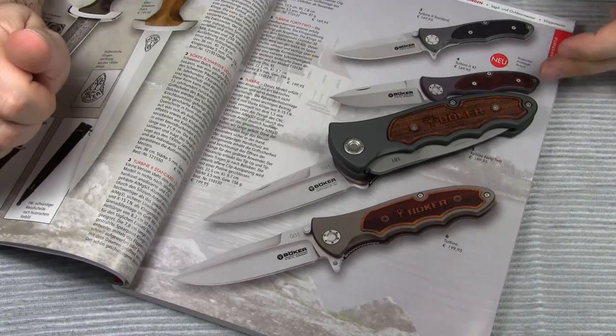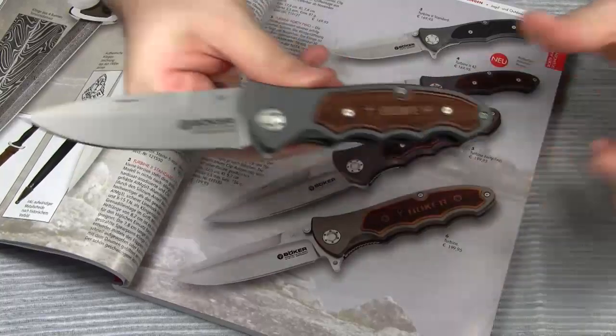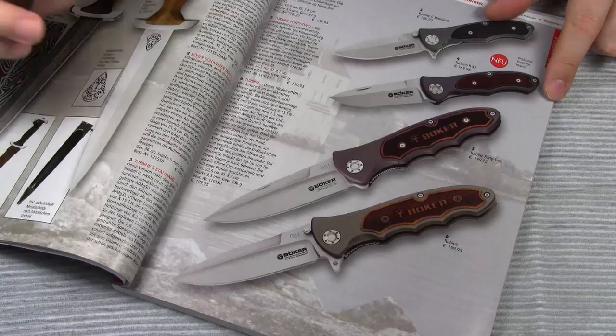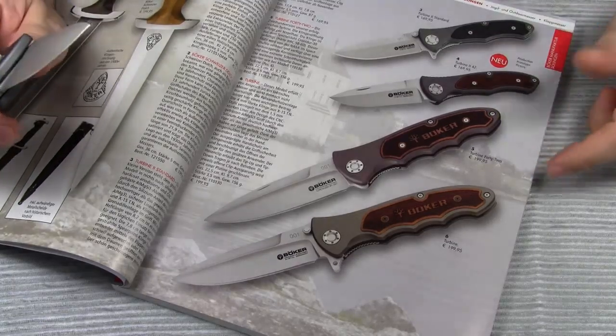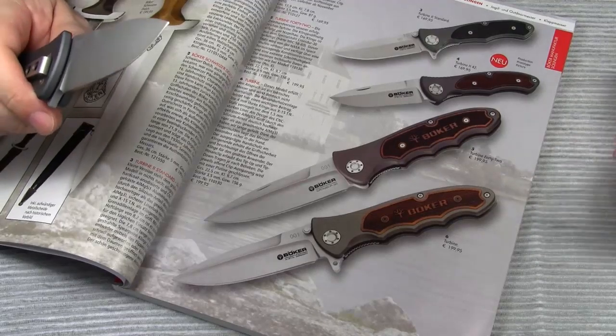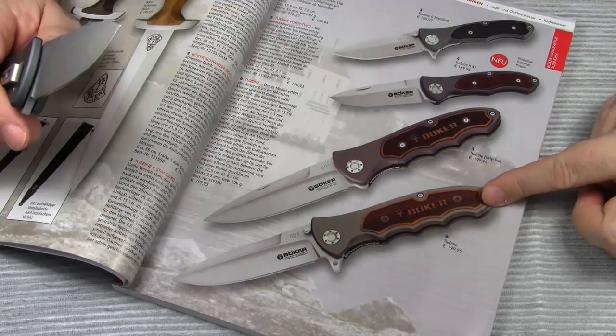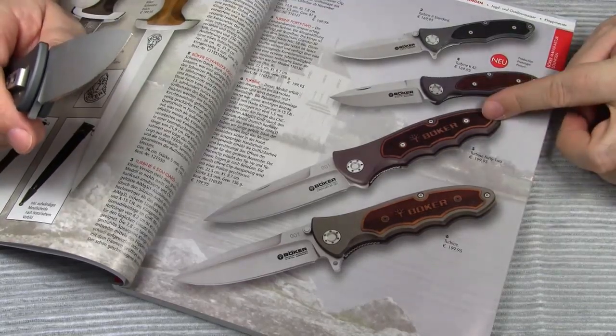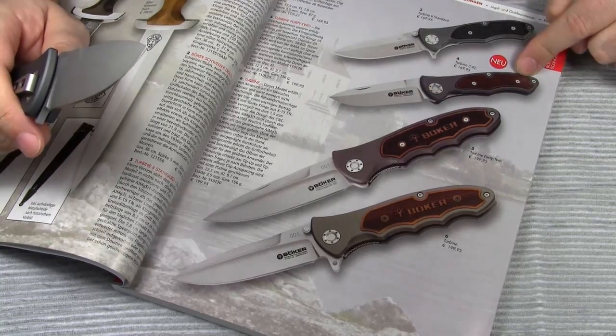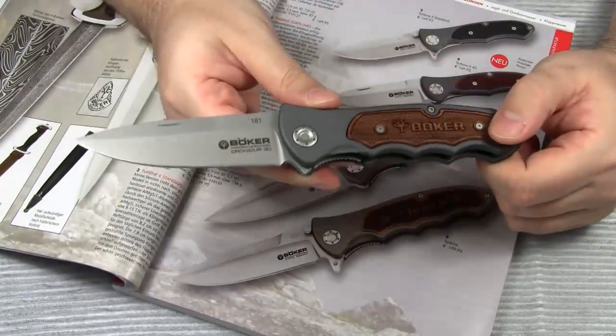But in general there are four different models. The standard size Turbine like this one, and the smaller Turbine 2. For the German market, Boker also released variants of the Turbine with the additional number 42. This number refers to Article 42A of the German Weapon Law. So we have the regular Turbine, the regular Turbine 42, the smaller Turbine 2 and the smaller Turbine 2 42.